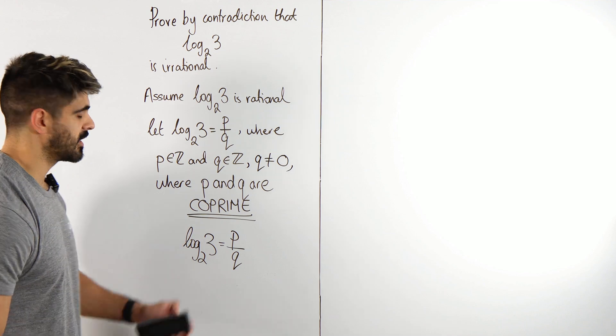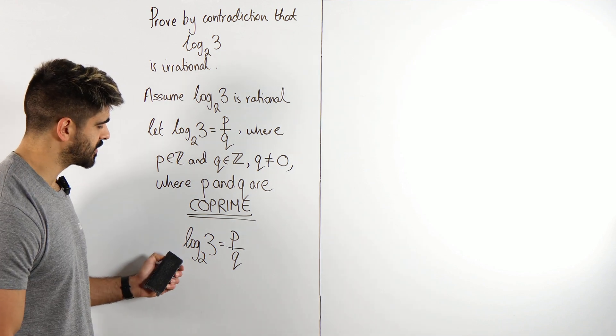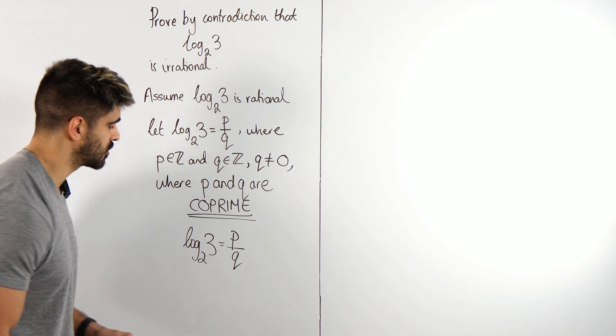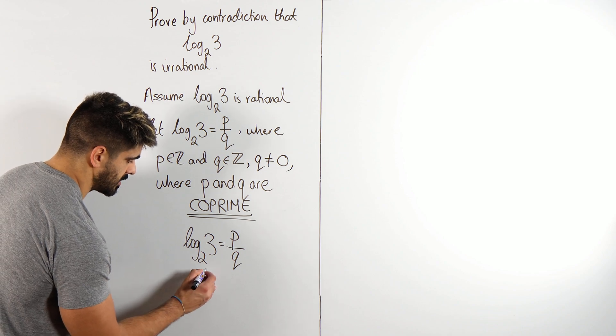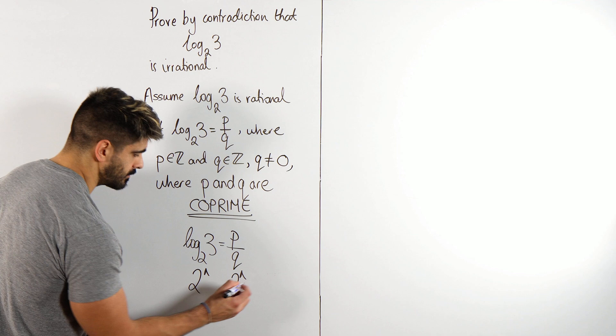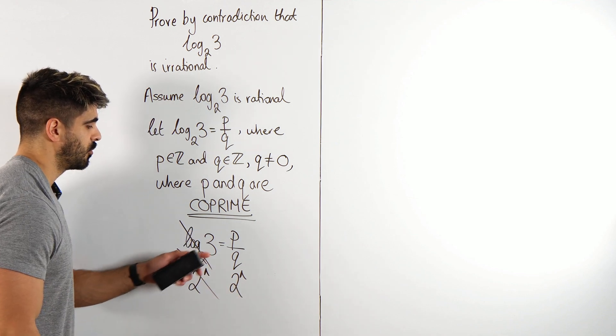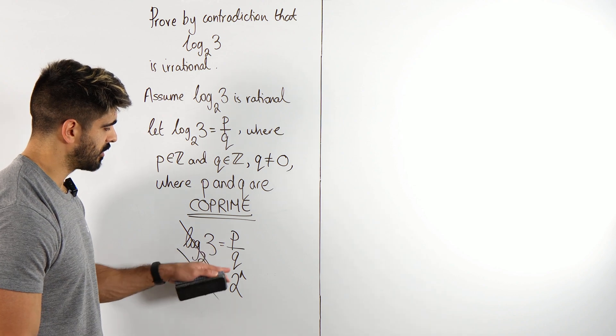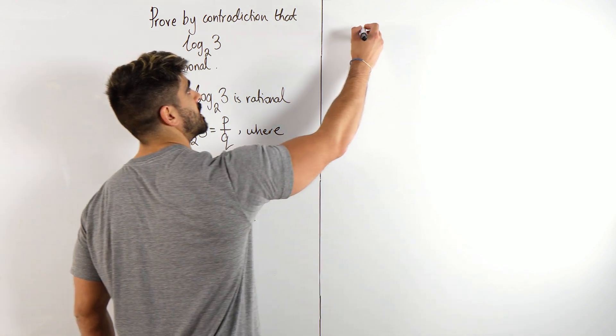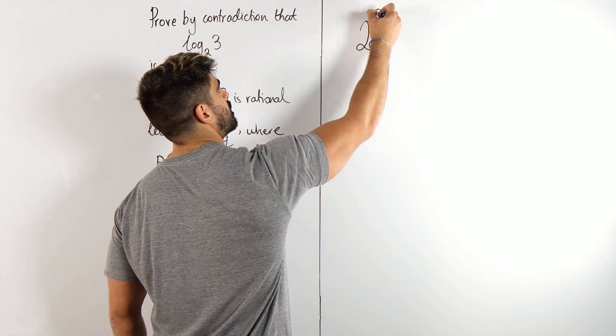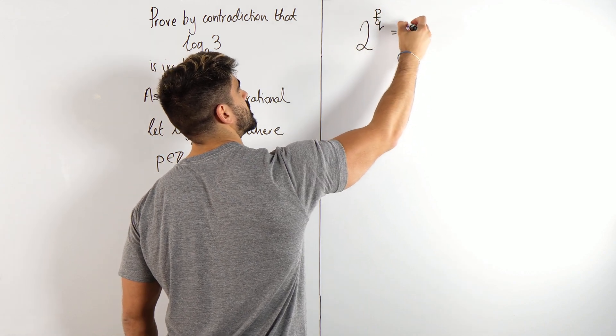The next thing we're going to do is we're going to get rid of that log base 2. What's the opposite or inverse function of log base 2? It's 2 to the power of. Okay, log base 2 and 2 to the power of cancel. We are left with 3 equals 2 to the power of this. I'm going to write that bit first. 2 to the power of p over q is 3.